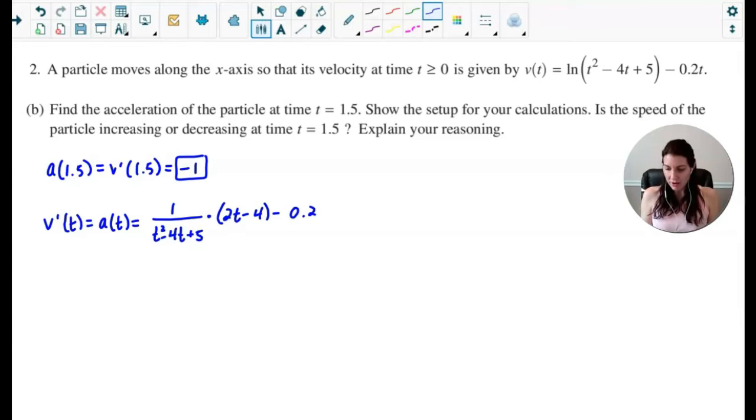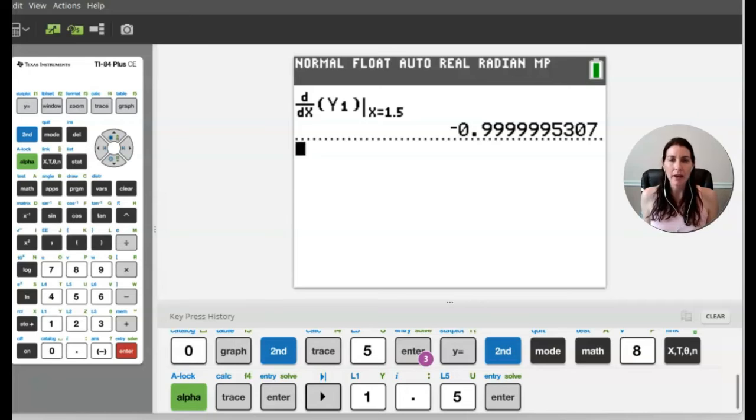And then for the second part, it says is the speed of the particle increasing or decreasing at time t equals 1.5, and explain your reasoning. To know if a particle's speed is increasing or decreasing, you have to look at the sign of both velocity and acceleration. Now, we already found the sign of acceleration was negative because it was negative 1. So now we need to find velocity of 1.5 and specifically not really what the value is, but just whether it is positive or negative is really what matters.